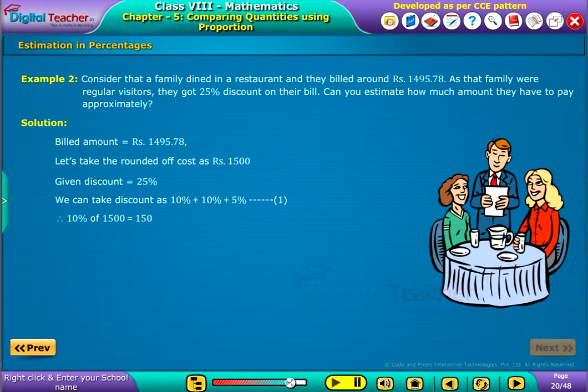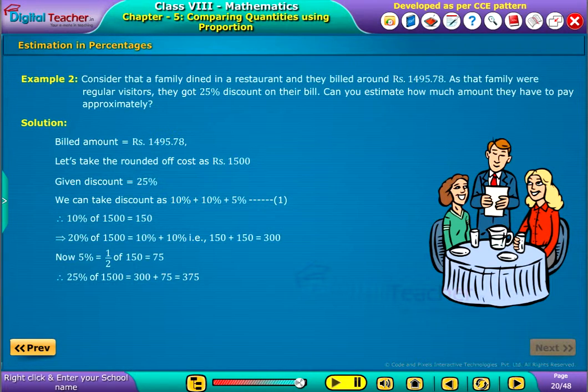Therefore, 10% of 1500 equals 150. That implies 20% of 1500 equals 10% plus 10%, that is 150 plus 150, which is equal to 300. Now, 5% equals half of 150, which is equal to 75. Therefore, 25% of 1500 equals 300 plus 75, that is 375.